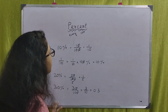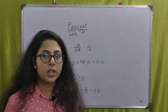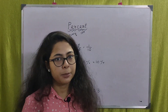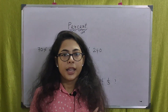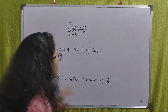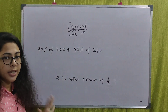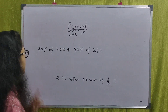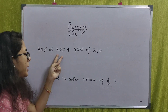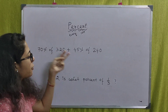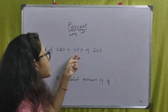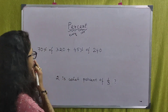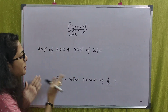This value is a percentage value. Now let's see how much is the percentage value. Here we have a numerical example: 70% of 320 plus 45% of 240.